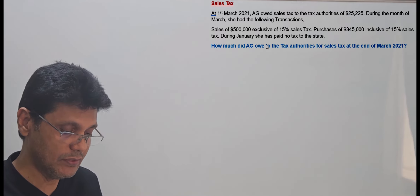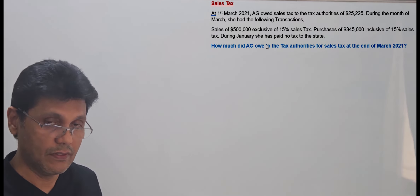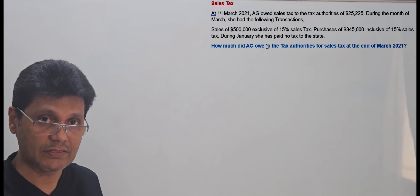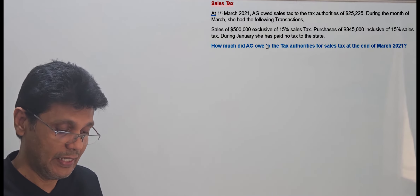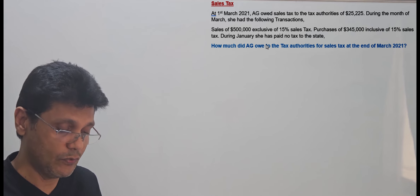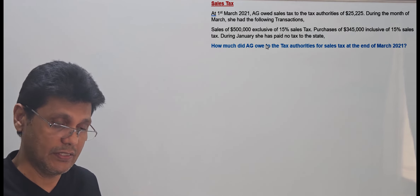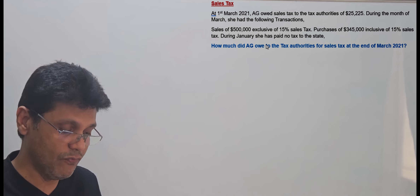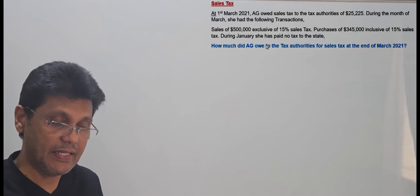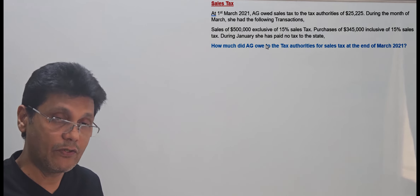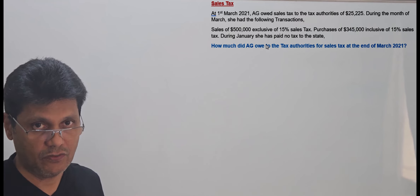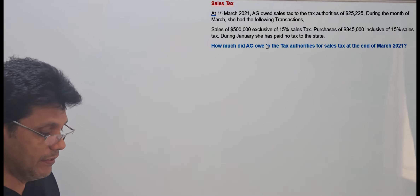On purchases of $345,000, this amount is inclusive of 15% sales tax. You need to identify the tax amount included in the purchases. As far as AG is concerned, they can claim the sales tax paid on purchases against their sales tax liability on sales. Let's calculate these amounts.